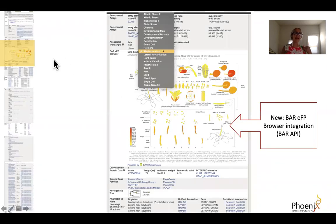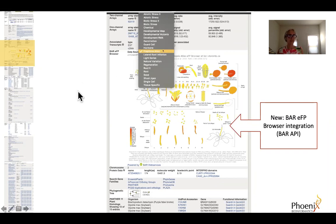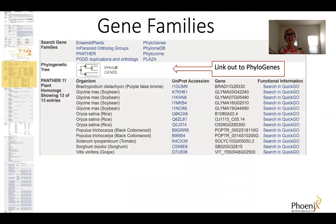Scrolling down on the locus page, understanding gene function often means understanding where and when genes are expressed. We curate low-throughput gene expression data, but we've also recently incorporated images from the BAR eFP Browser so that you can rapidly access high-throughput gene expression data. You can toggle the view directly from within the locus page.